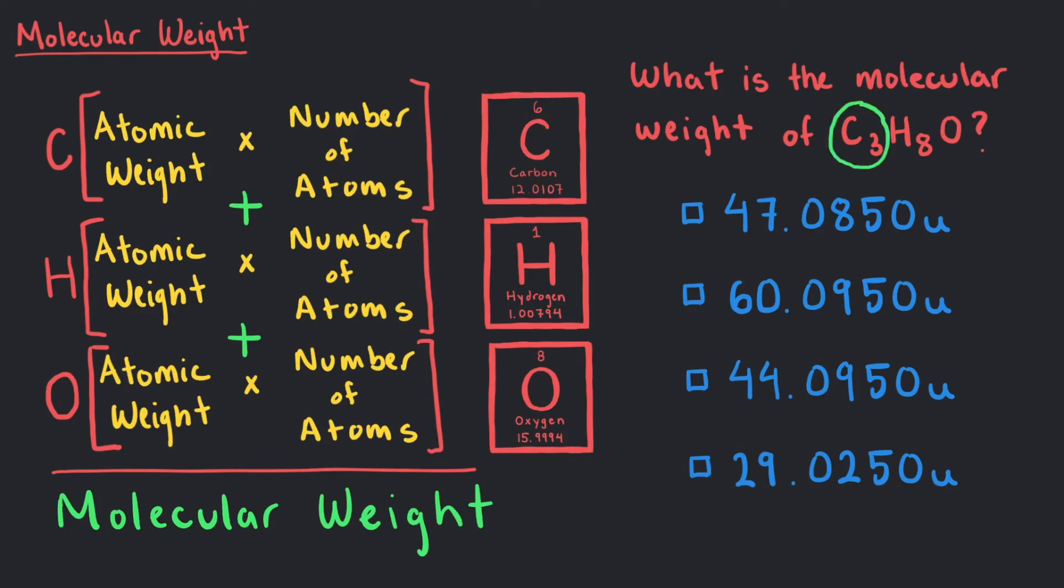First, we will look at the carbon atoms. The atomic weight for one carbon atom is 12.0107U. So if there are three carbon atoms in this formula, we want to multiply 12.0107U by three atoms to get 36.0321U.